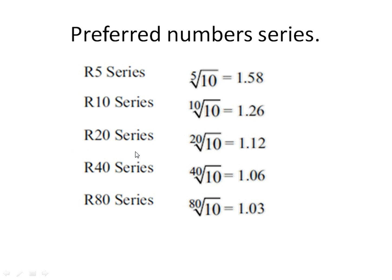If a company is using R20 series in its design phase, that is 20th root of 10, the company can vary 12% of its original characteristic. If a company is using R40 series, that is 40th root of 10, the company can vary 6% of its original characteristic.